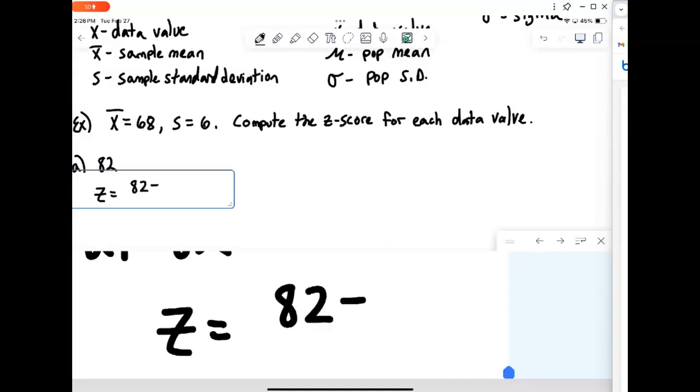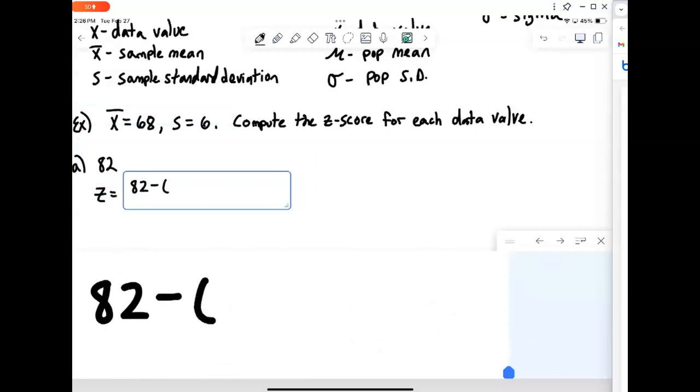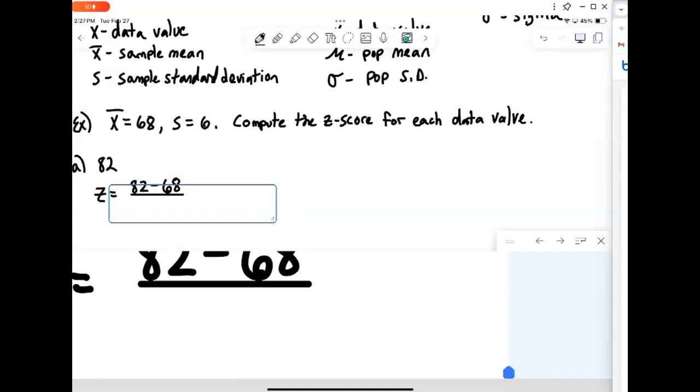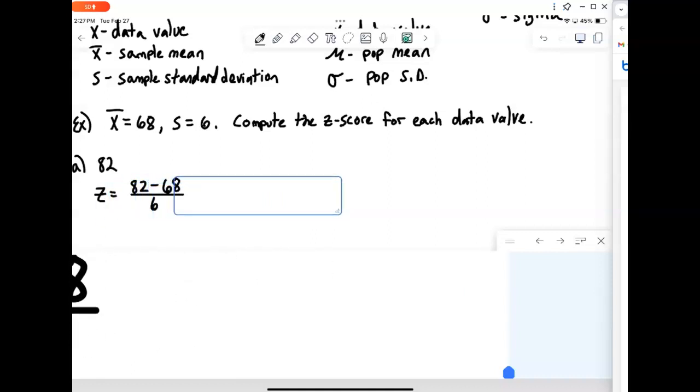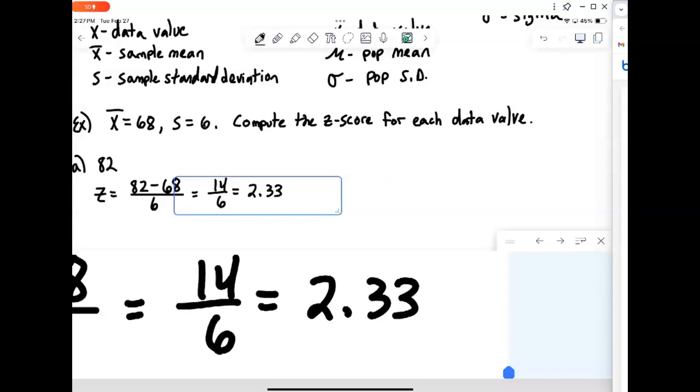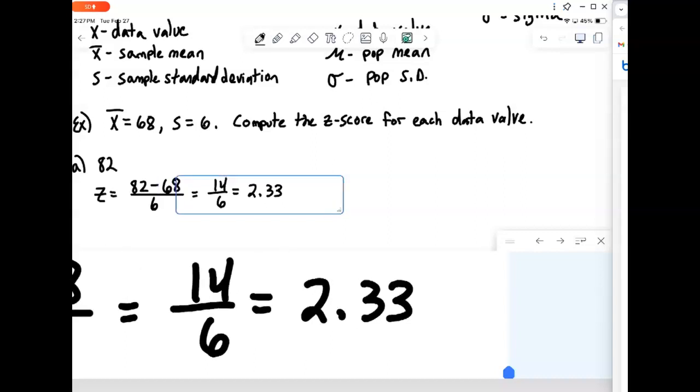And then simply divide by our standard deviation. So that would come out to be 14 divided by 6. And usually we want a decimal answer for these. So that would come out to be 2.3 repeating. So we might end up saying that it's about 2.33 if we round off. Okay, so 2.33 for that example there.